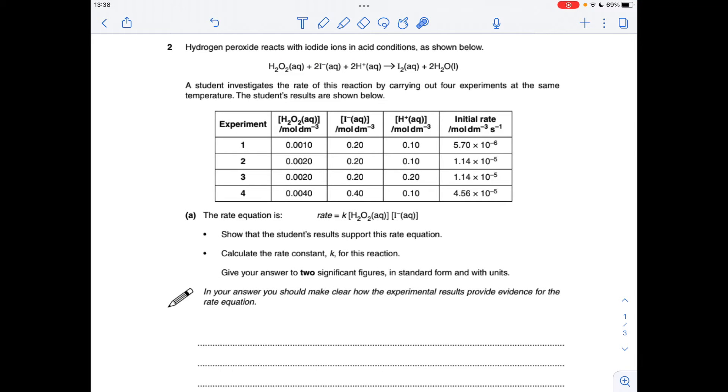For the first part of the question, we've got to use these results here to support this rate equation. So basically, we've got to show that the order with respect to hydrogen peroxide is 1, likewise for I-, and we've got to show that the order with respect to H+ is 0, because it's not in the rate equation.